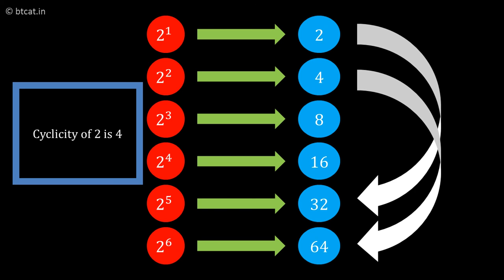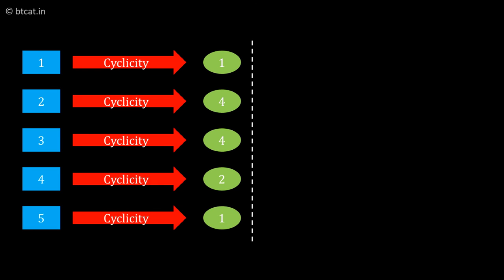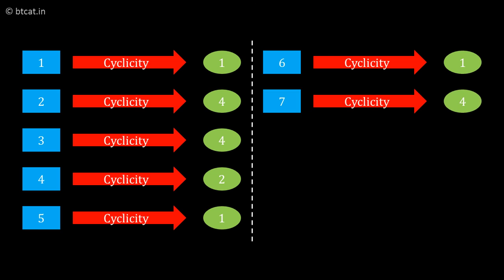If you make a chart: the cyclicity of 1 is 1, cyclicity of 2 is 4, cyclicity of 3 is also 4, cyclicity of 4 is 2 (because it goes 4, 6, 4, 6...), and cyclicity of 5 is 1.